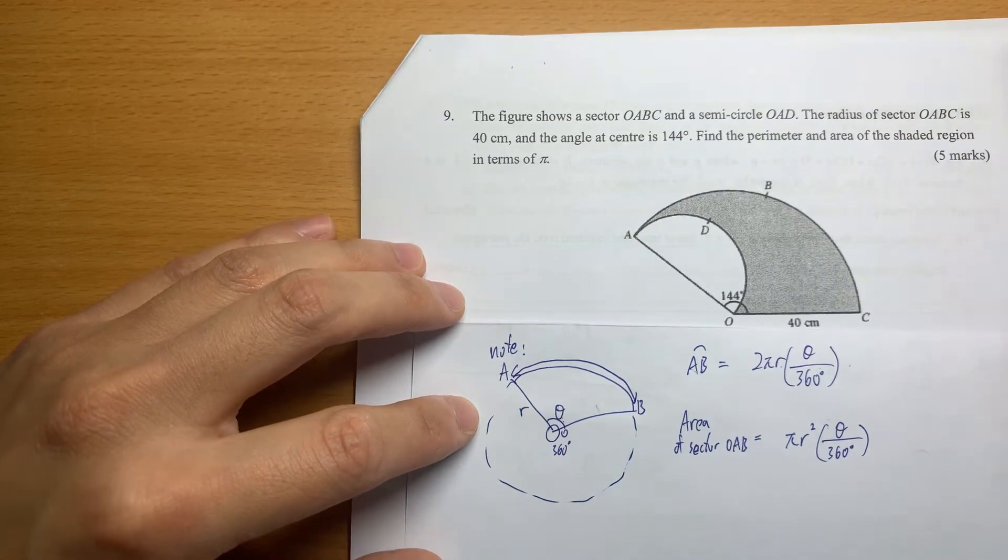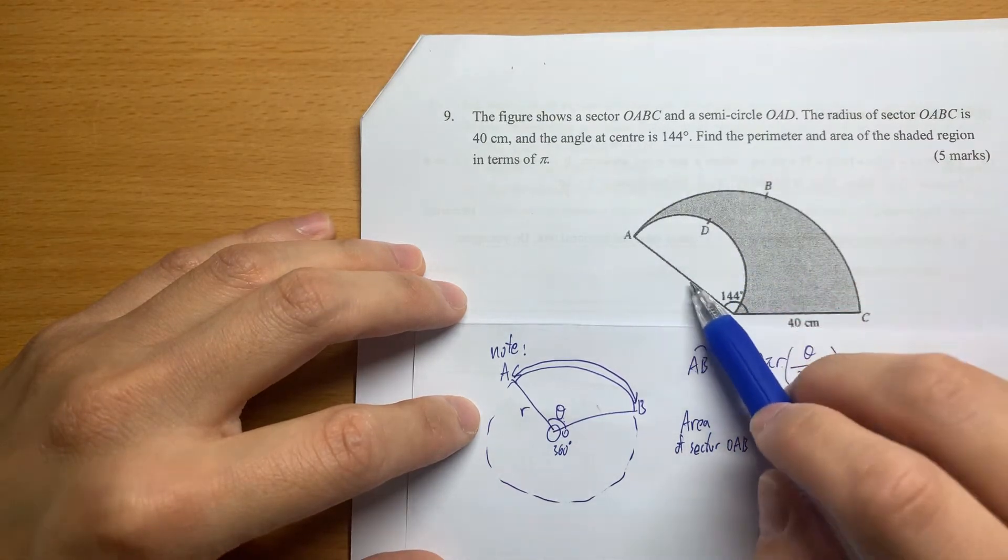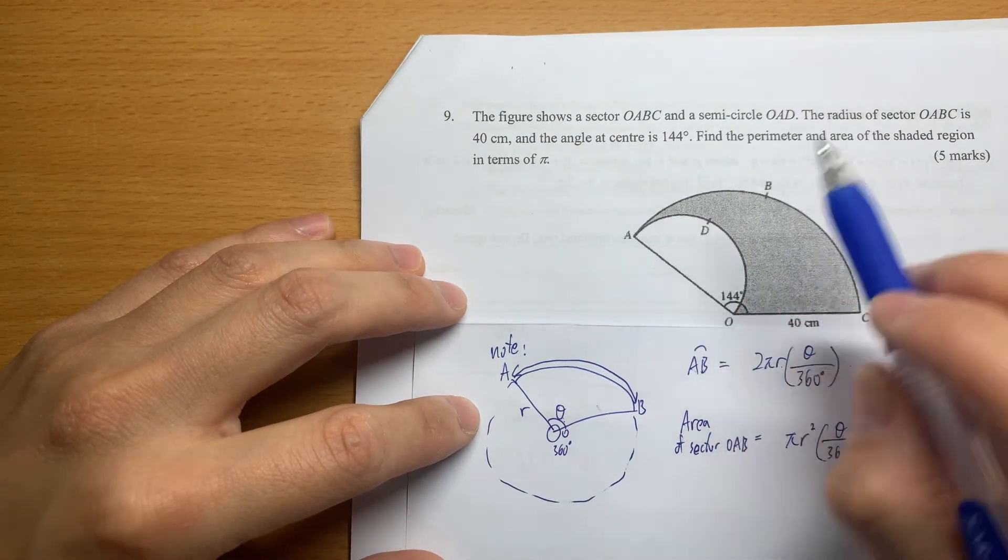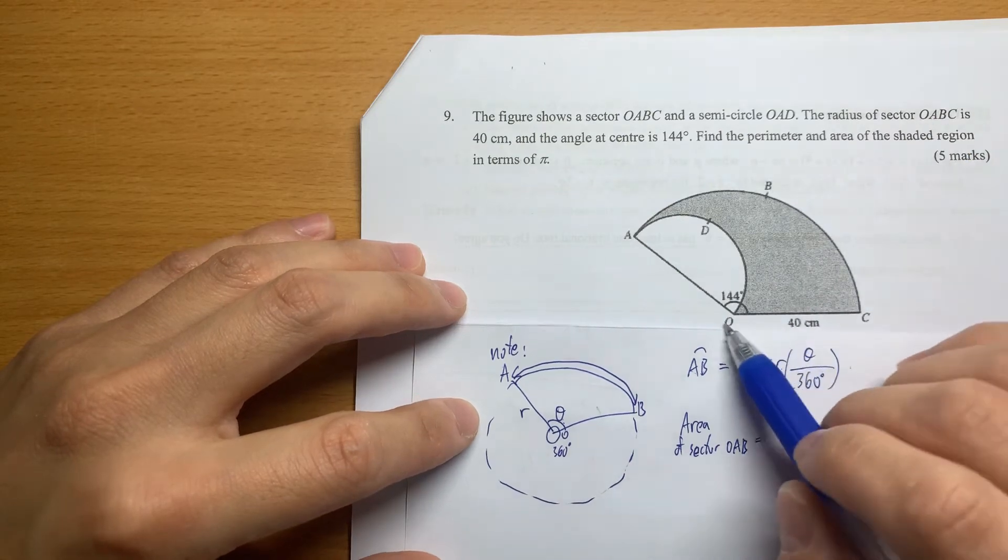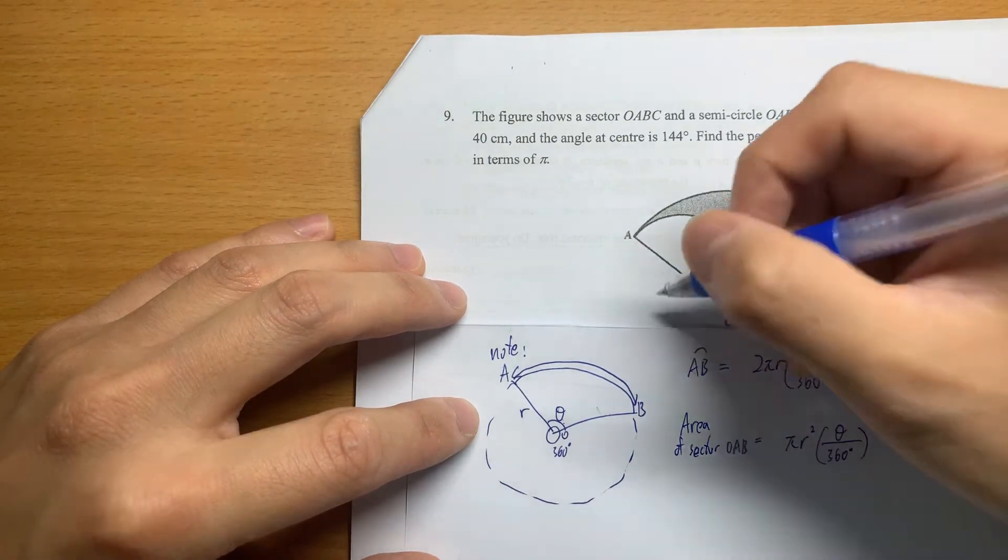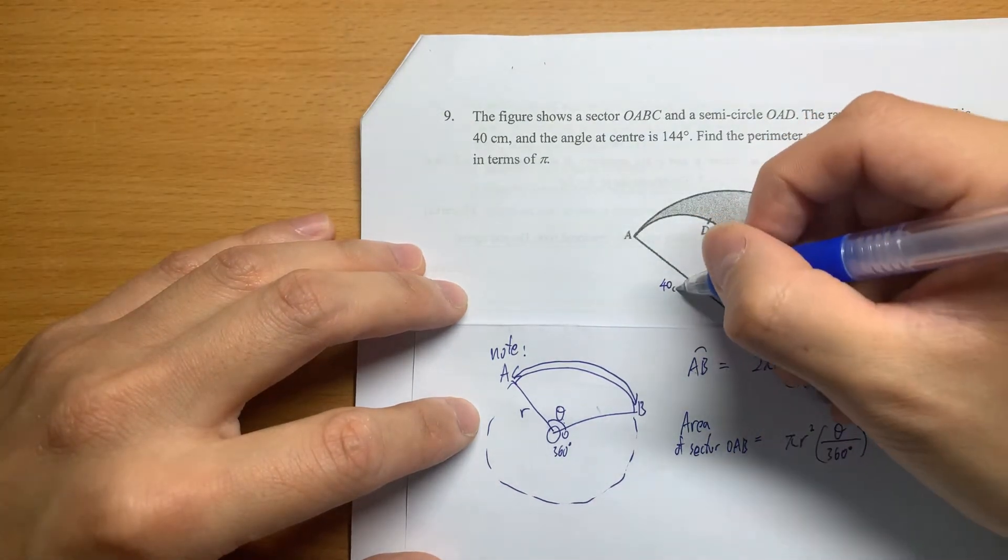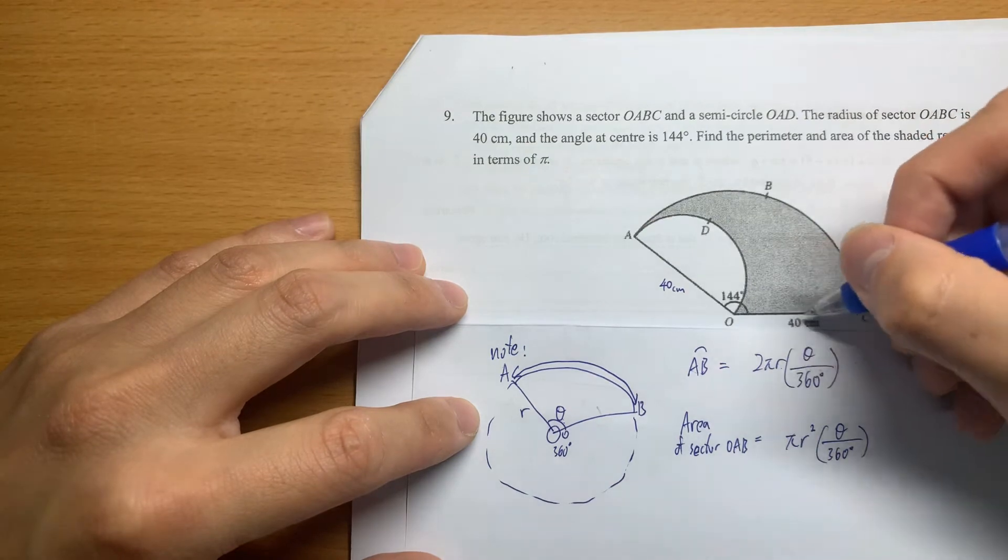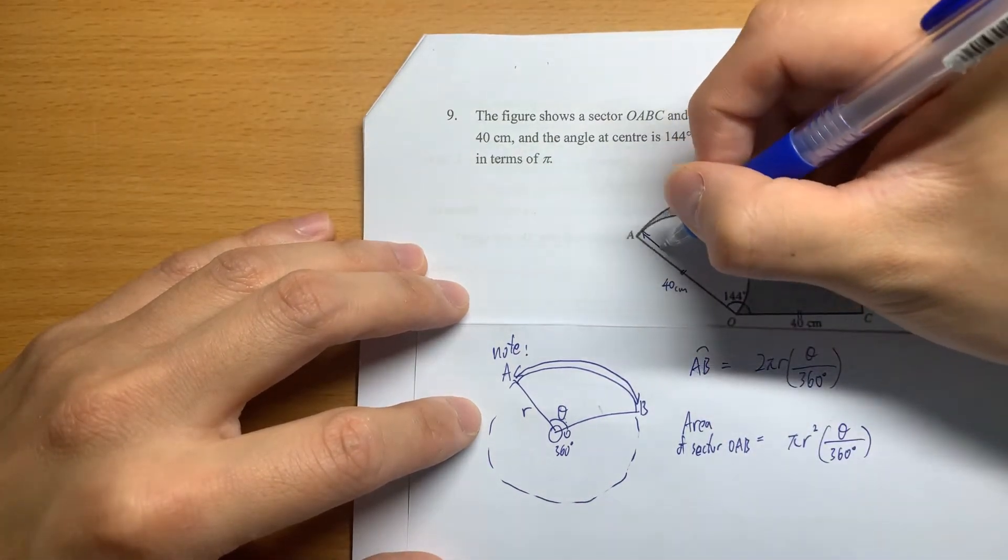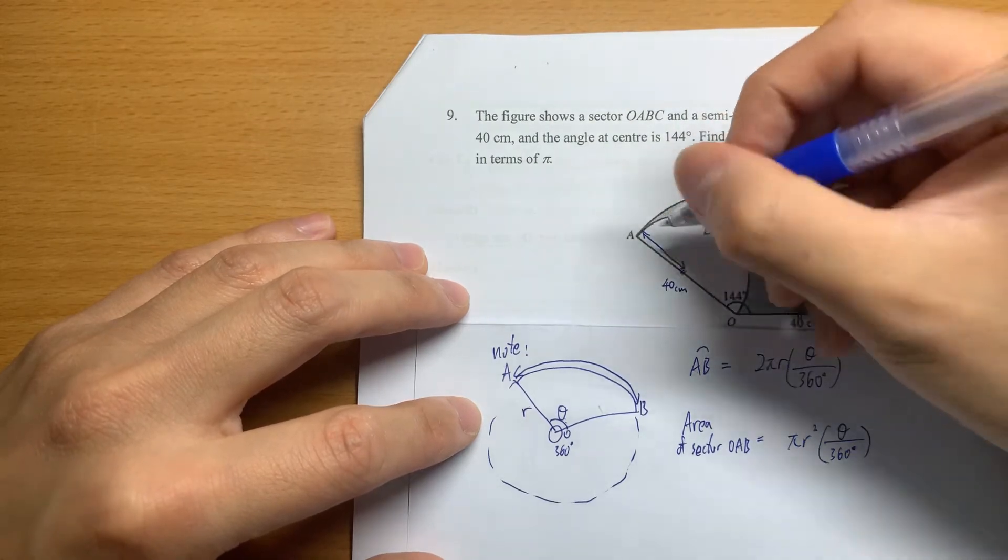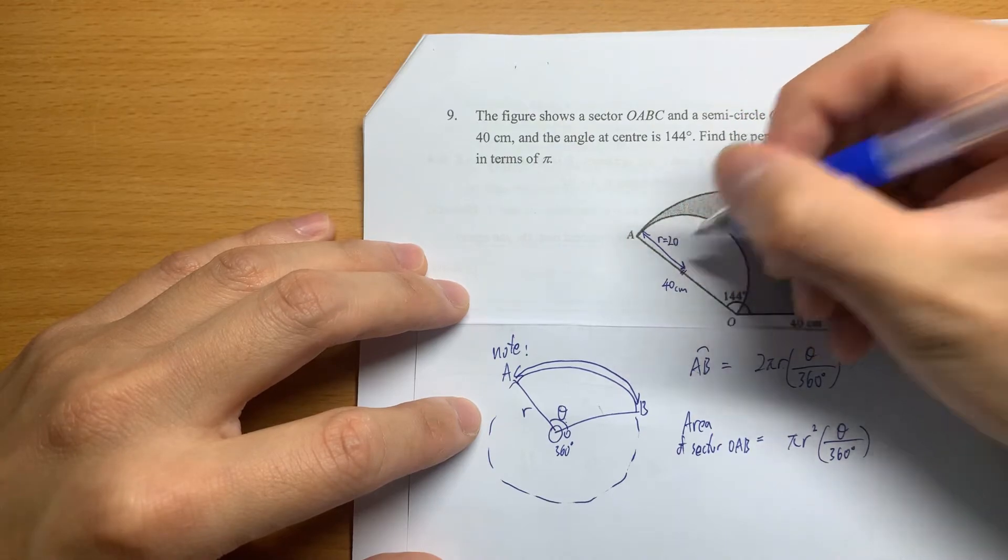OABC - this is a semicircle, half of a circle. The radius of this sector is 40 cm, so this is 40 cm. This is also 40 cm because they say this one is a sector, that means this is radius, then this is radius also. At the same time, they tell you that the small r, the radius of this semicircle, is half of it - 20 and 20.